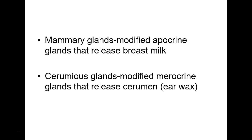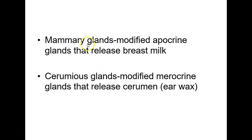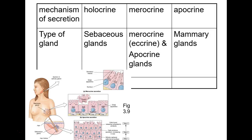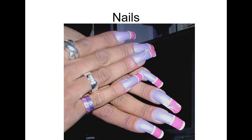Mammary glands are modified apocrine glands — that's what mammary glands actually are, which is kind of surprising. Mammary glands, also called lactiferous glands, use a merocrine mode of secretion. Ceruminous glands are modified merocrine glands that release cerumen — earwax — but we won't cover those until the neurology unit when we discuss the ear. Make sure you know mammary glands use an apocrine mode of secretion.